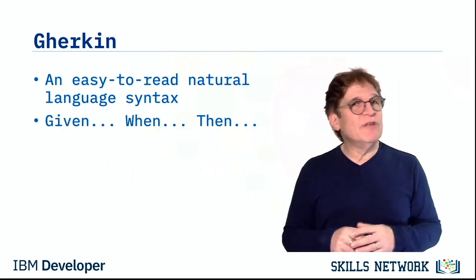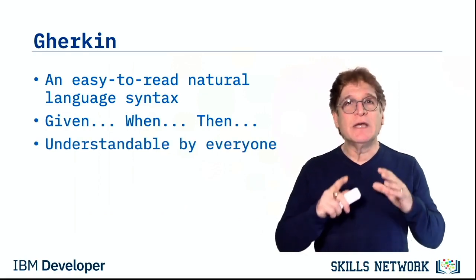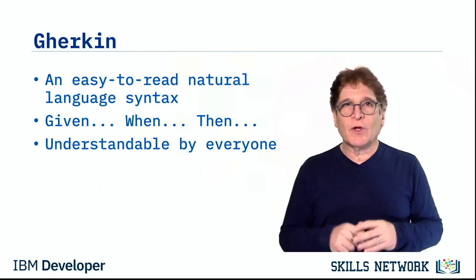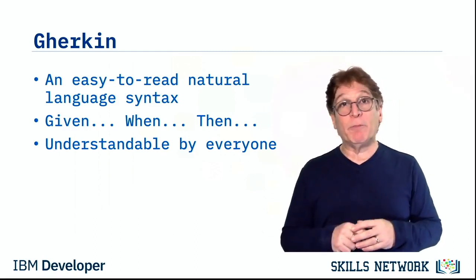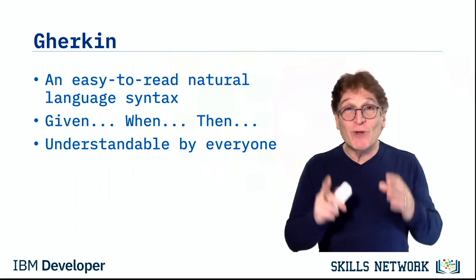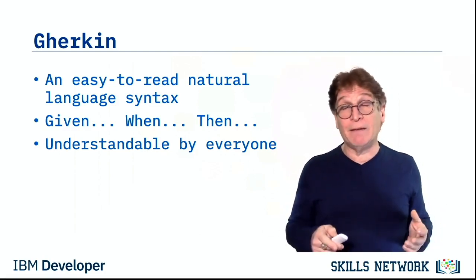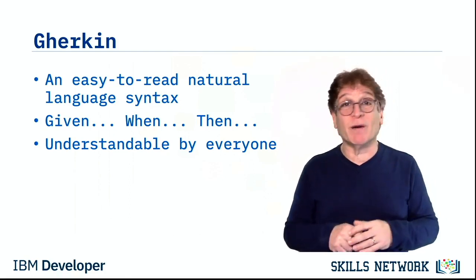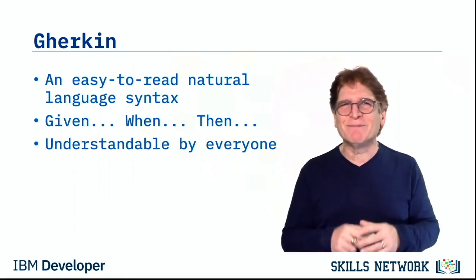Gherkin is an easy-to-read, natural language syntax that uses a familiar given-when-then syntax. Gherkin is easily understandable by both technical and non-technical people. If you're wondering where the name Gherkin came from, the original tool that used this syntax was called Cucumber, and Gherkin is a pickle — and pickles are made from cucumbers. Tools have a funny way of producing funny names like that.